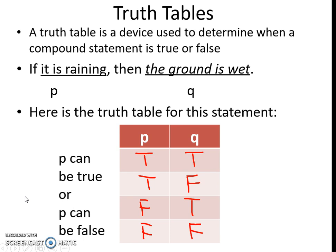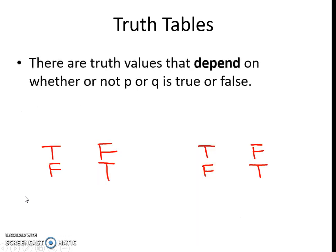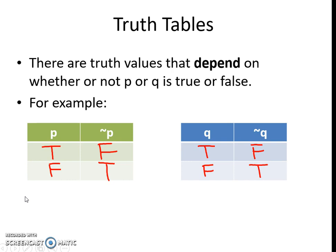Here is a truth table. P can be true or P can be false. Q can be true or Q can be false. There are truth table values that depend on whether P or Q is true or false. For example, if P is true, then NOT P will be false — it is the inverse. If P is false, then NOT P will be true. If Q is true, then NOT Q will be false. If Q is false, then NOT Q will be true. So it is just doing the inverse — when you see the negation, you just flip it and write the inverse.